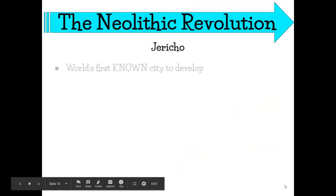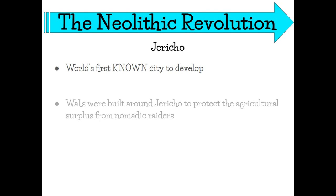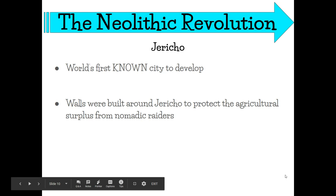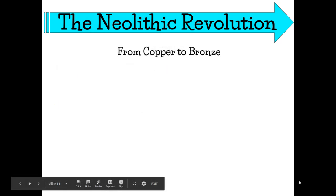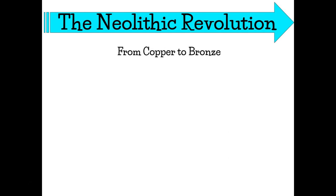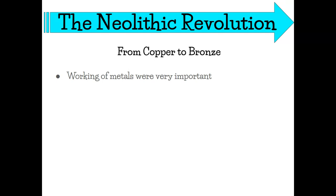Jericho was the first known city to develop — we had known about it long before the discovery of Çatalhöyük in the 1950s. Walls were built around Jericho to protect the agricultural surplus from nomadic raiders. It's famous in the Bible and was the first civilization attacked by the Israelites, which we'll cover later. Jericho was probably the first to develop warfare, as they had to protect their surplus from nomadic tribes. Working metals were also very important — they needed metal for agriculture and for protection.